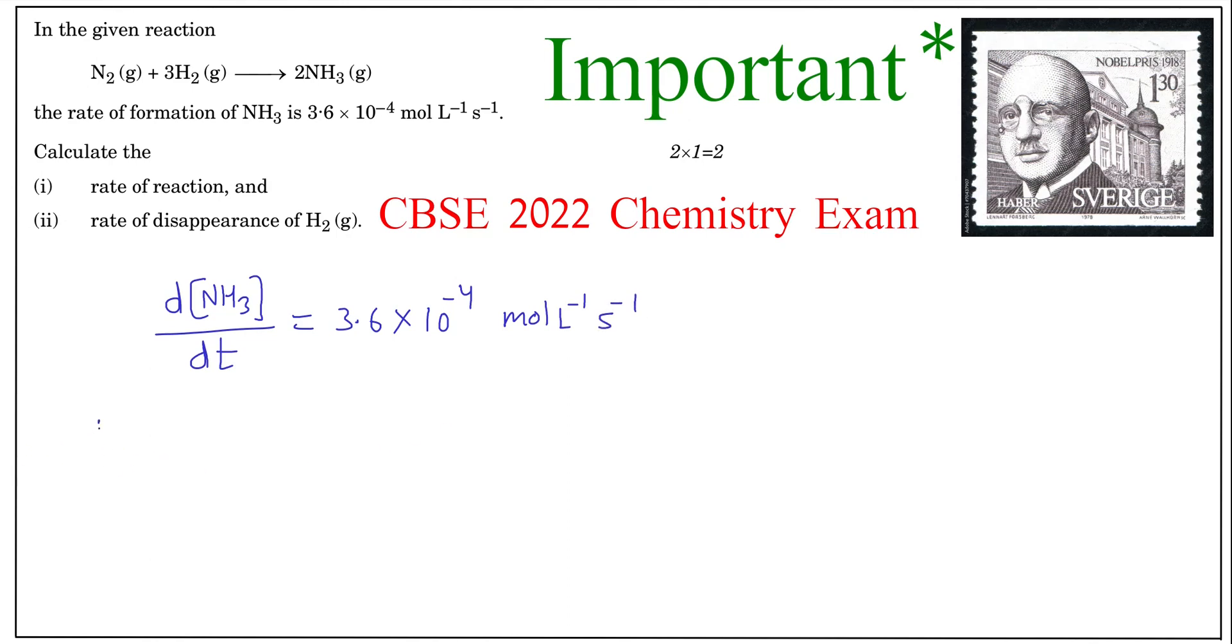And now you have to find out the first part of the question says the rate of reaction. So if we write the rate of the reaction, you know that rate of the reaction is equal to rate of formation or rate of consumption of products or reactants respectively divided by their corresponding stoichiometric coefficients in the balanced reaction.